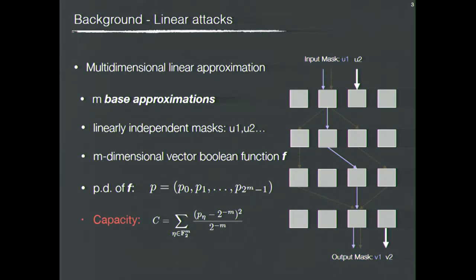A multidimensional linear approximation uses approximations with linearly independent masks to construct an m-dimensional vector Boolean function F. We call these m approximations base approximations. If the probability distribution of F is denoted as P, then the capacity of the m-dimensional linear approximation is defined accordingly. Similar to correlation, capacity is the most important way to measure how effective a multidimensional linear attack is.